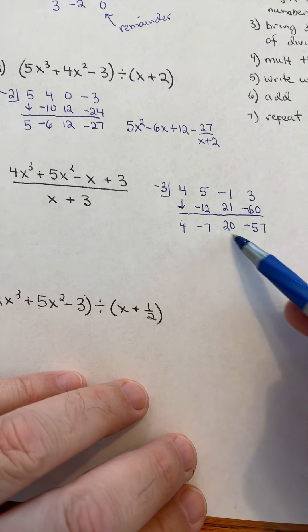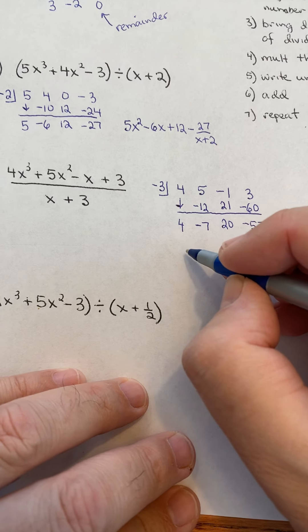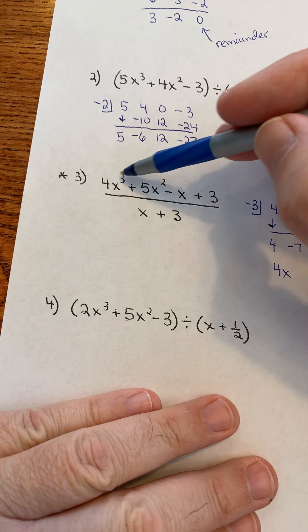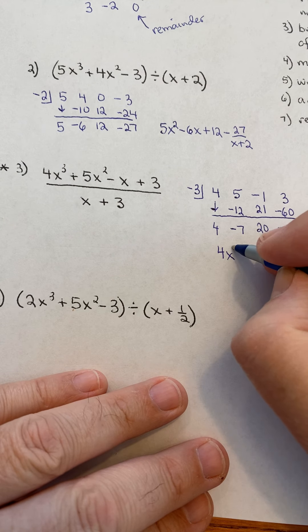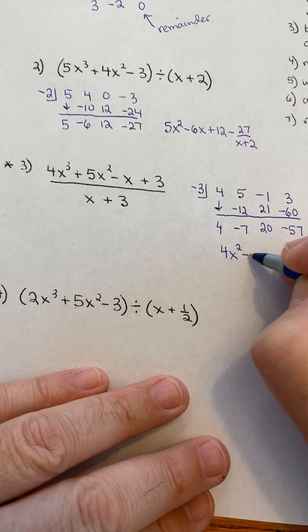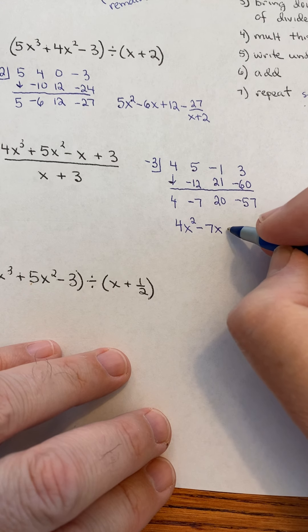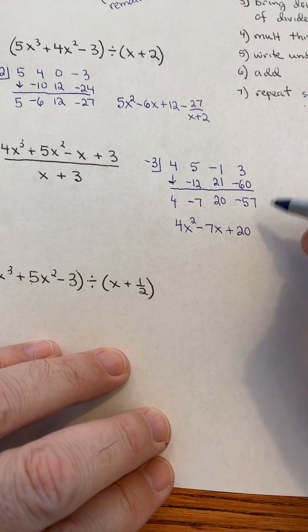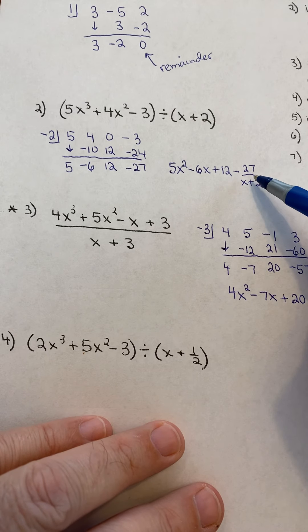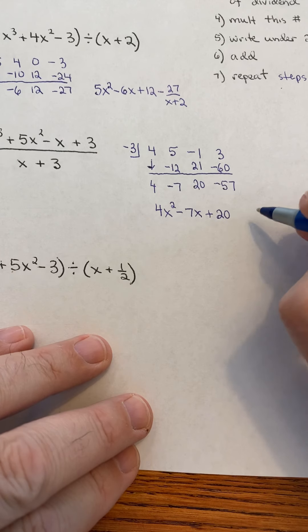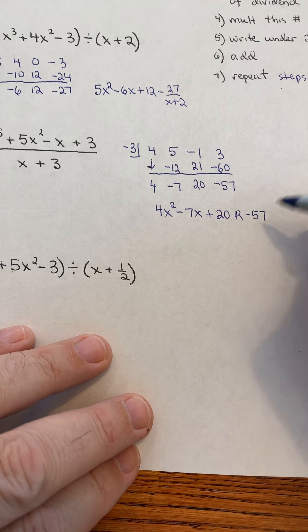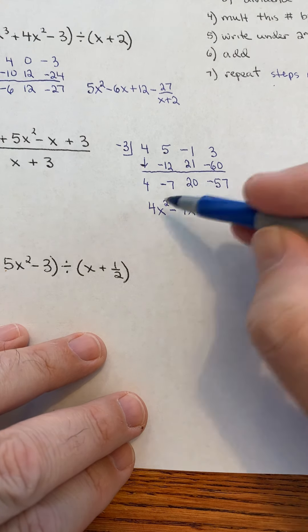And these represent the coefficients in my answer. So, it would be 4x, one less than the original. 3 minus 1 is 2. So, it would be 4x squared minus 7x. Just decrease your exponent by 1. And then, the last term is the remainder. Now, you can write it like we did here. Or, you can write it like this. They mean the same. A lot of times in synthetic division, we write them like that.